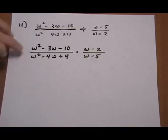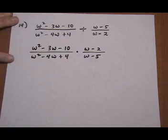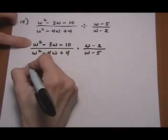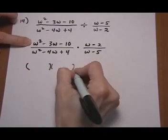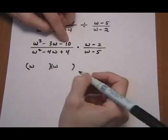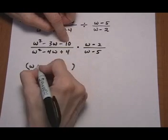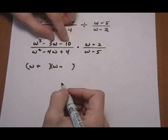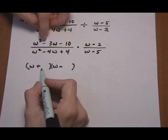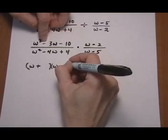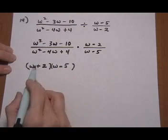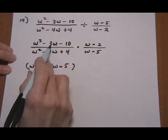Now we have separate terms, so we're going to try to factor. Factoring the first one—it's a trinomial, so go for the binomial factors. We have w and w. Factors of 10 that are different signs, which add to be a 3. So 5 and 2 would work. We want a minus 3, so put the larger one, the 5, with the minus sign. Then just quickly check it: w² minus 5w plus 2w is minus 3w, times negative 10—that works.